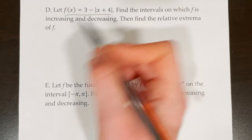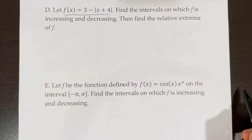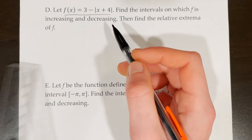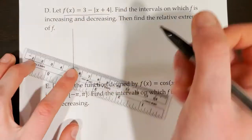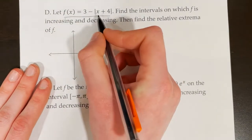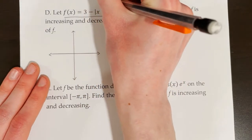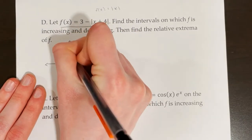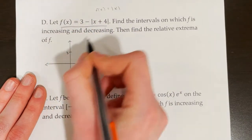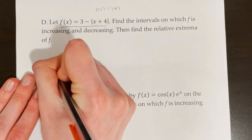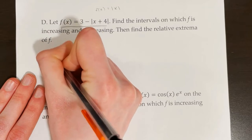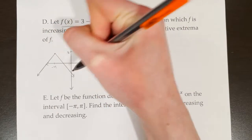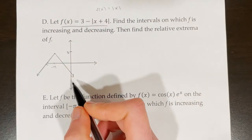So I'm going to set up a little graph here. Looking at the transformations applied to the parent function f of x equals the absolute value of x: it has been moved up 3 units, so it starts at 3. And x plus 4 means it's been moved 4 units to the left, so the vertex will be at negative 4, 3. Since it's negative, it will be going down.